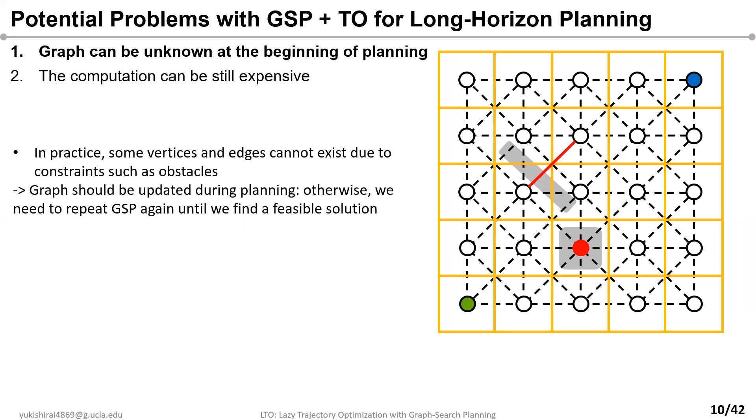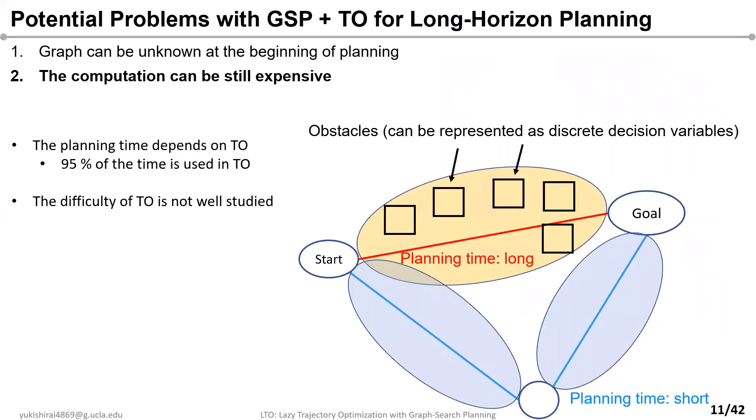Instead, you can find the feasible vertices and edges prior by solving TO before GSP. But this operation can also be time-consuming. Another problem is that the computation can be still expensive with the integrated planner. The integrated planner solves TO associated with each edge calculation, and it just considers the nearby constraints from the edge. It means that depending on the edge, the computation can be very long.